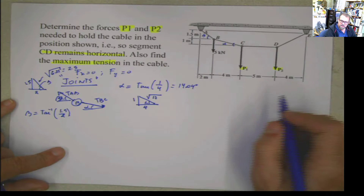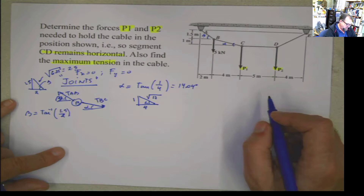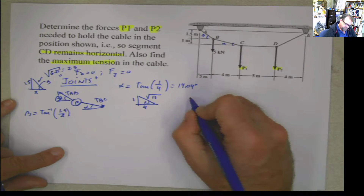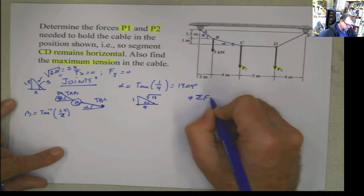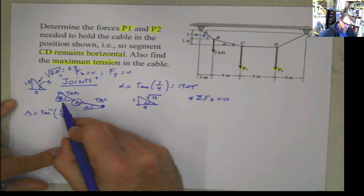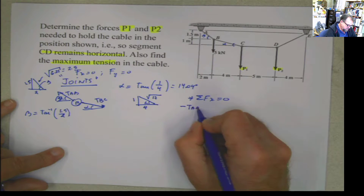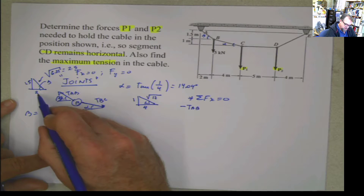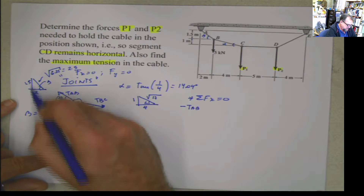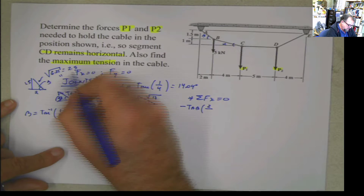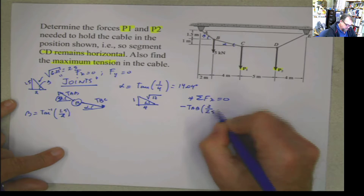We can just go back and jump directly to the method of the joints. And we say summation of forces in x equals 0. If we do summation of forces in x equals 0, it will be negative TAB cosine beta. Or instead of using cosine beta, I'm going to use the triangular ratio — I can say that it's 2 divided by 2.5.